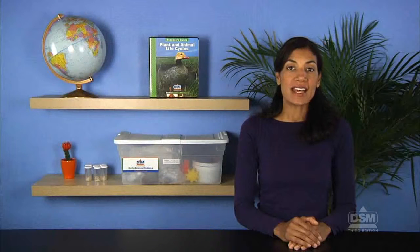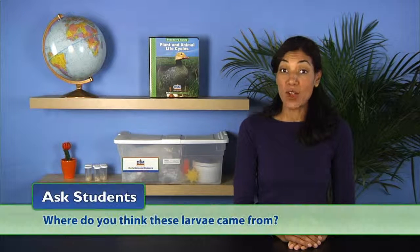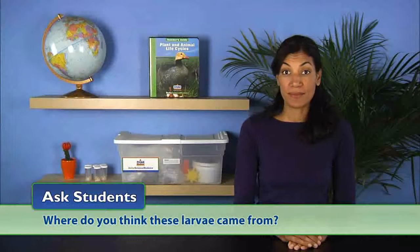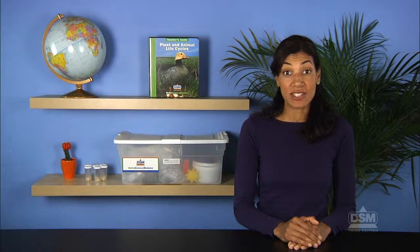Explain to the class that larvae is the first stage after the hatching of the animal that undergoes metamorphosis. Ask students, where do you think these larvae came from? Students may be able to speculate that the eggs hatched and the larvae came out.